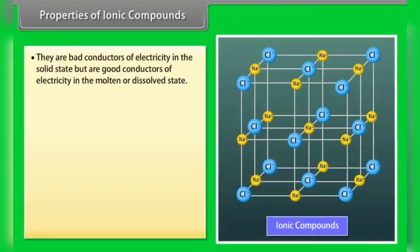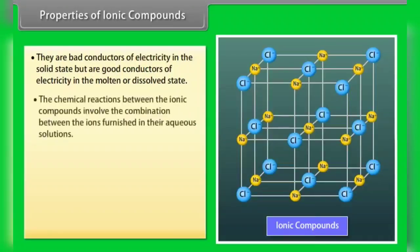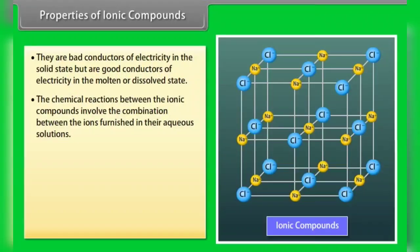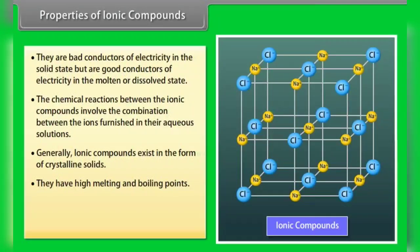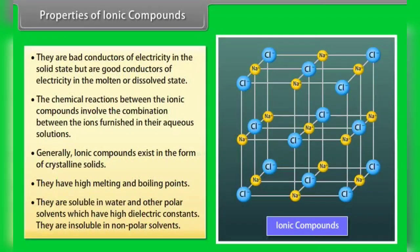The common properties of ionic compounds are: they are bad conductors of electricity in solid state but good conductors in molten or dissolved state. Chemical reactions between ionic compounds involve combination between ions in aqueous solutions — such reactions are called ionic reactions. Ionic compounds generally exist in the form of crystalline solids, have high melting and boiling points due to strong electrostatic force of attraction. They are soluble in water and other polar solvents with high dielectric constants, but insoluble in non-polar solvents.